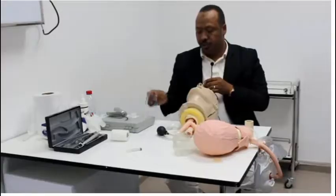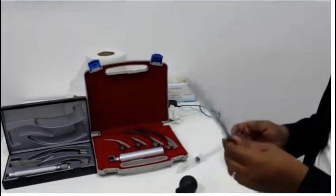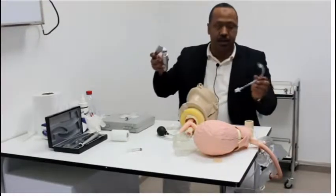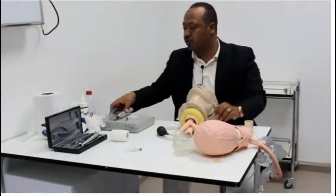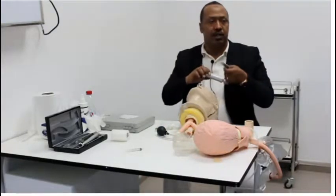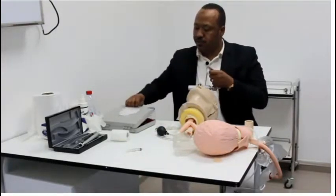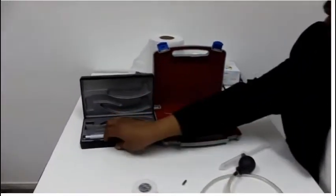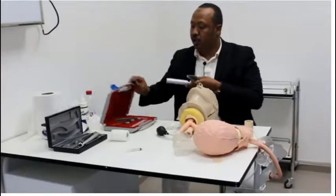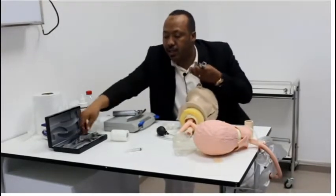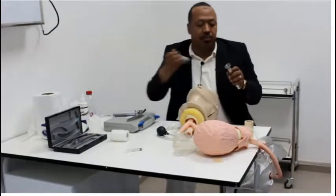The equipment which I need for the tracheal intubation: the laryngoscope. We have two sets of laryngoscope here. This is size 3 or 4, this is adult laryngoscope. It comes with different plates. This is the pediatric style.